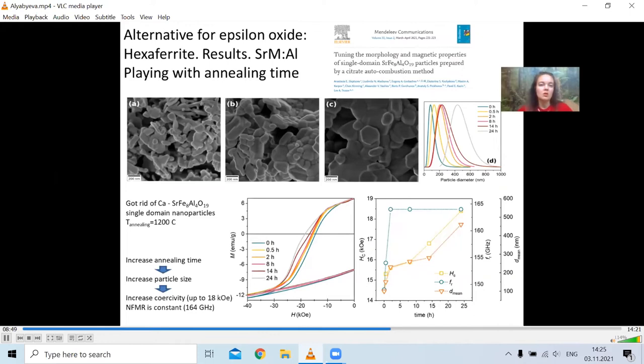It appeared that variation of annealing time allows you to increase the size of the particles. And increasing the size of the particles, if you will not go beyond the single-domain limit, will allow you to increase the coercive force. And that's what we've done, and it appeared that we can enhance it from 14 kOe to 18 kOe. The frequency of the ferromagnetic resonance is not that sensitive to the particle size. After a few hours of annealing, it does not change anymore.